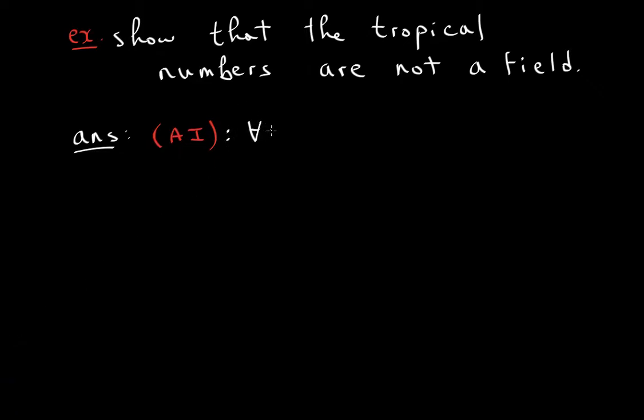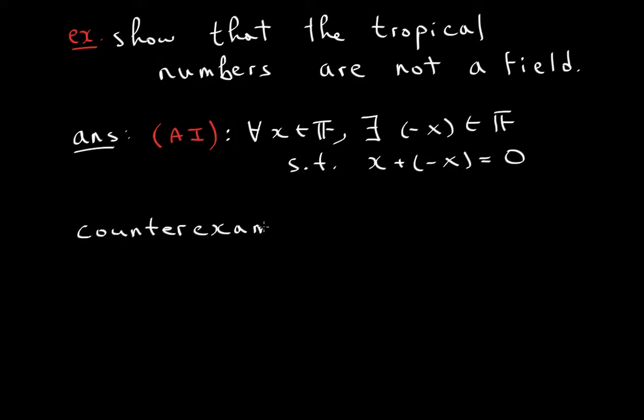Additive inverse was defined in the following way. For all X's in a field, there exists a minus X, which is also part of the field, such that if you were to add them, you would get your additive identity, which is zero. So my counterexample is let X be zero.